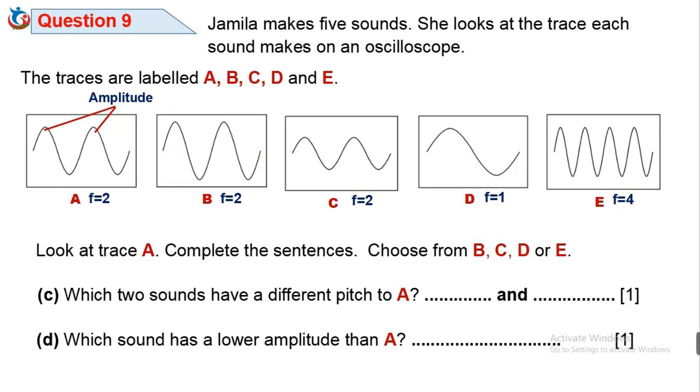Question 9C: Which two sounds have a different pitch to A? To answer this question, you should know that the pitch of a sound depends on the frequency. So the sounds with different pitch to trace A are the sounds with different frequencies. They are sound D and E having one and four respectively.